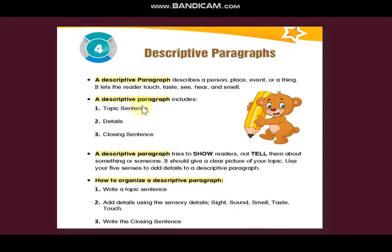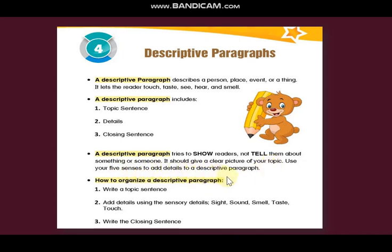Let's read it out. A descriptive paragraph describes a person, place, event, or a thing. It lets the reader touch, taste, see, hear, and smell. A descriptive paragraph includes a topic sentence, detail, and closing sentence. A descriptive paragraph tries to show readers, not tell them, about something or someone. It should give a clear picture of your topic. Use your five senses to add details to a descriptive paragraph.